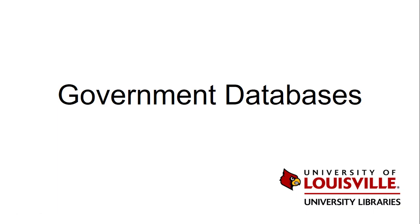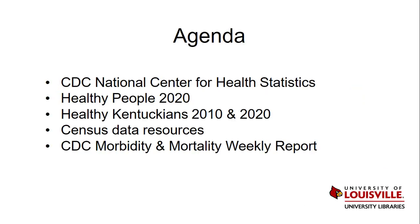Hello and welcome to this video on biomedical and public health government databases and data resources. Today we're going to provide a quick overview of the following five government websites: the CDC's National Center for Health Statistics, the Healthy People 2020 website, the Healthy Kentuckians 2010 and 2020 reports, the U.S. Census Bureau's data resources website, and the CDC Morbidity and Mortality Weekly Report. I will provide a brief description of each site and describe how to navigate to the specific resources you will need. Links to all resources are embedded in the YouTube description section of this video.